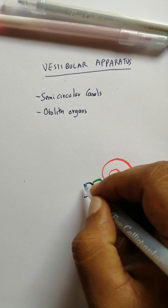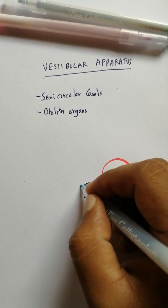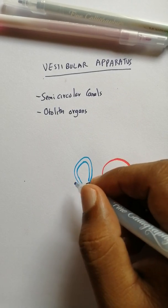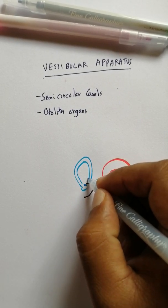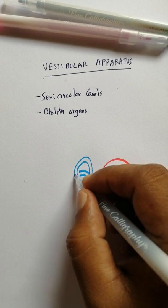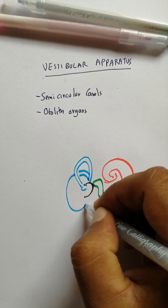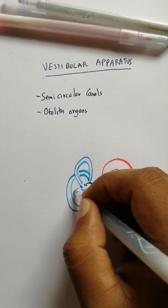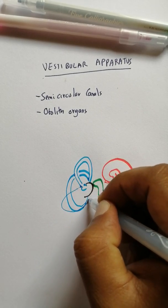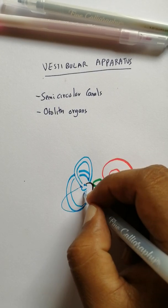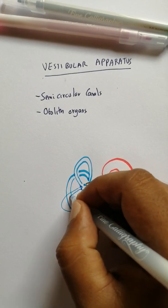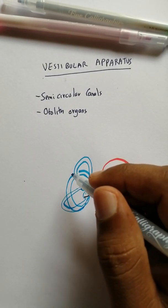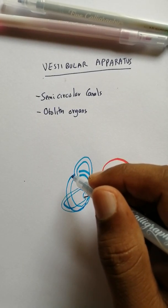And then you have the semicircular canals. Semicircular canals are actually aligned in three planes, three coaxial planes—horizontal, vertical, and the third. You can see that they are in three planes and at 90 degrees to each other.